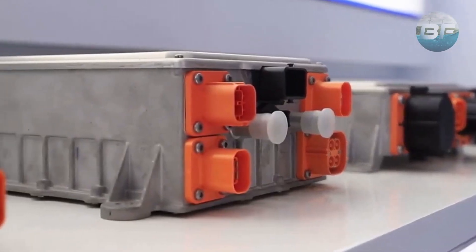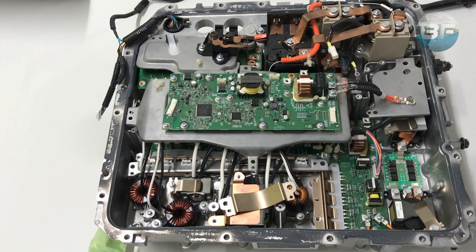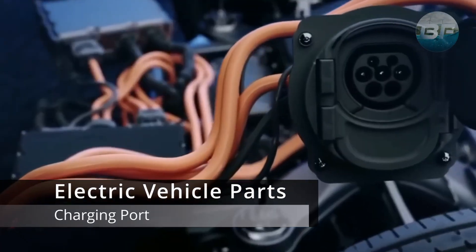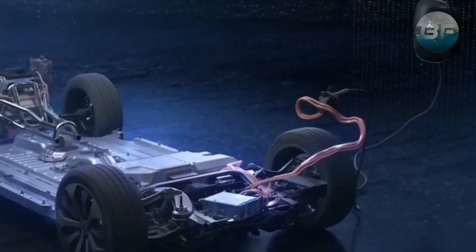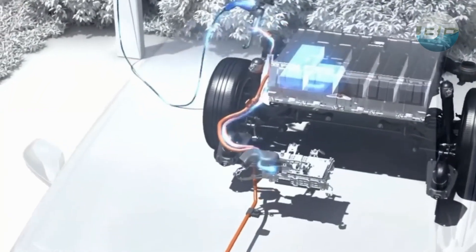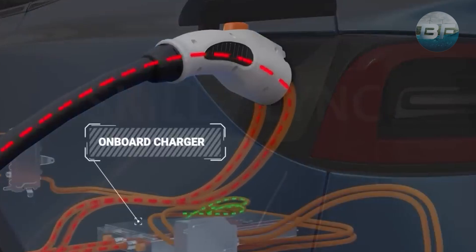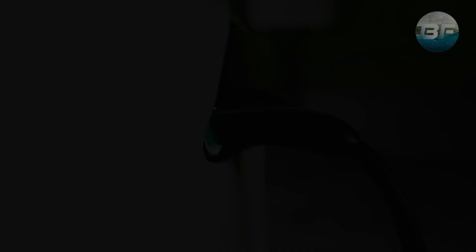The onboard charger typically consists of a power conversion module, control electronics, and a charging port. The charging port is located on the outside of the vehicle and is used to connect the EV to the charging station. Most modern electric vehicles are equipped with onboard chargers that are capable of charging the battery pack at different rates, depending on the charging station's output and the vehicle's battery capacity.